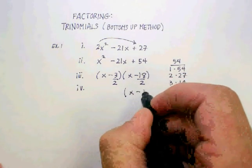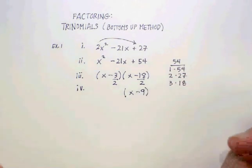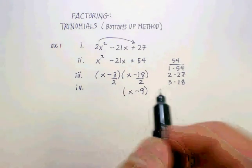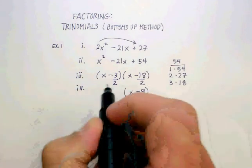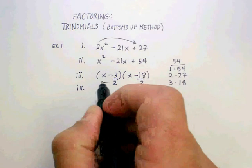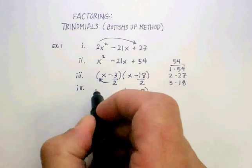With this one over here, you're going to get x - 9. Over here you can't simplify 3 over 2 any further, and this is where the bottoms-up name comes in. If you can't simplify that any further, this is where you bring the bottom up.